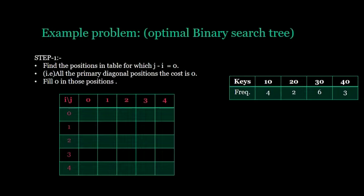Step 1: Find the positions in table for which j minus i equal to 0, i.e., for all the primary diagonals. Their costs are 0, so fill in the primary diagonal with 0.